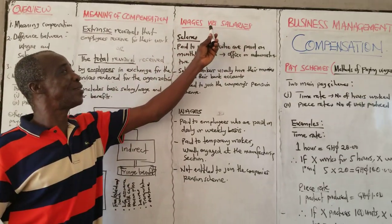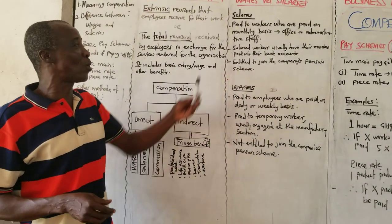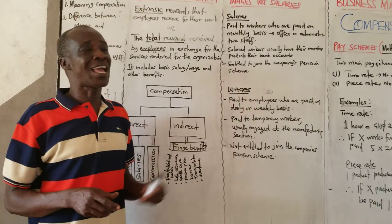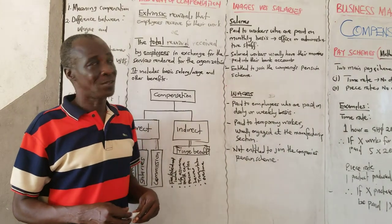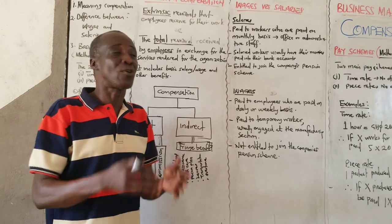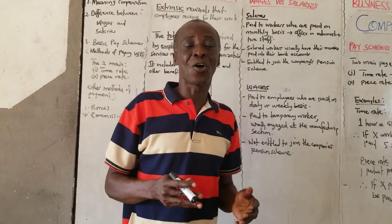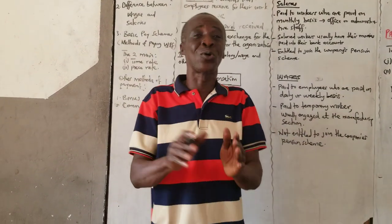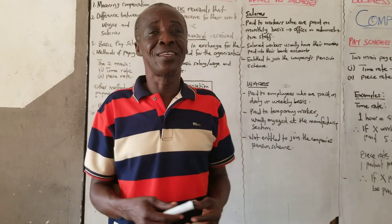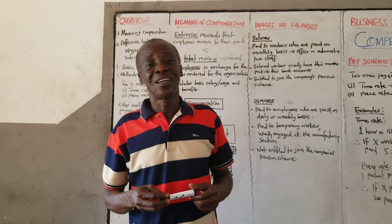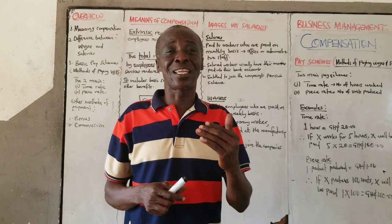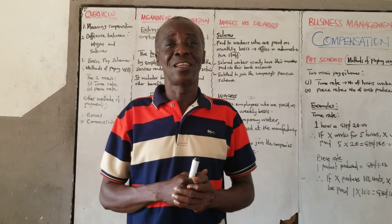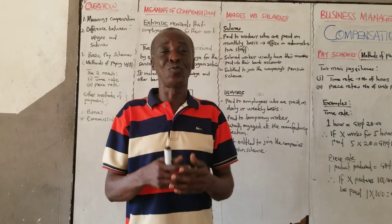Now let's move to wages and salaries and look at the difference. When we talk about salaries, they are paid to workers who are paid on a monthly basis, and they are usually office or administrative staff who receive salaries. Let me caution you: it is possible for wages to be paid at the end of the month, but that is not the normal practice. The difference is that wages are paid on a daily basis. For example, if you are working on a wage basis, every day you go to work you will be paid, let's say, ten cedis.